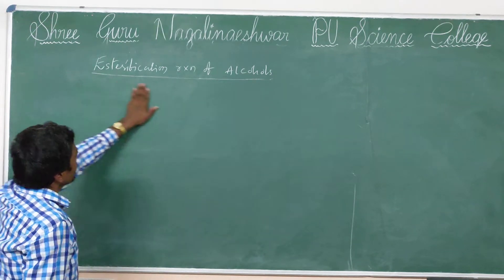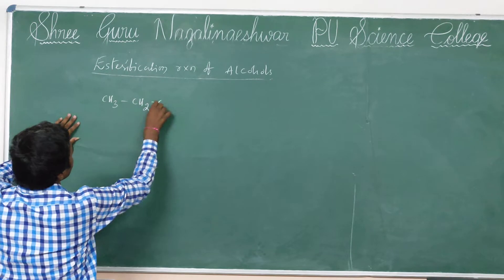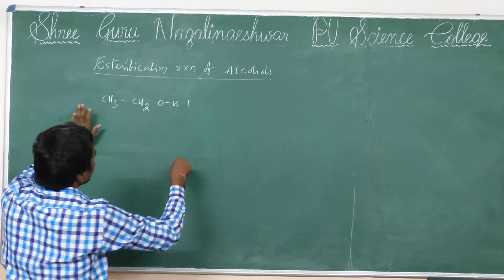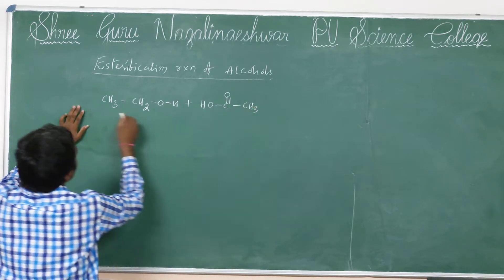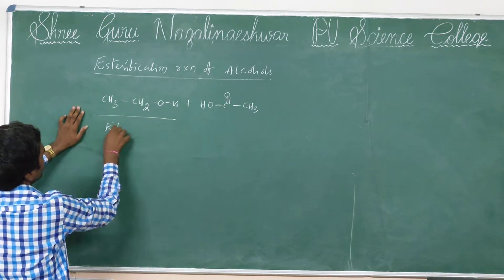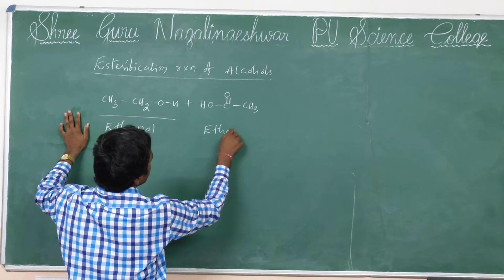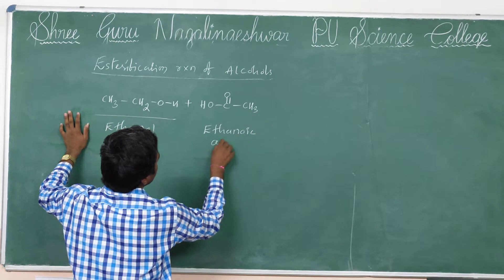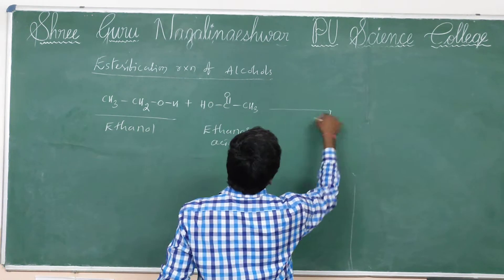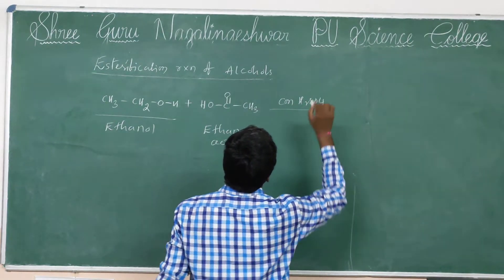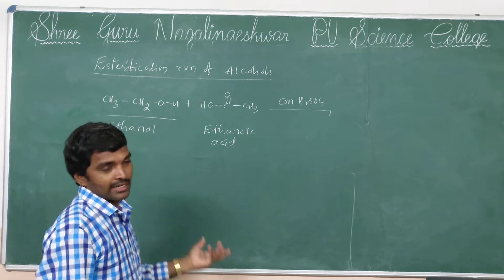So here, ethyl alcohol CH3CH2OH reacts with carboxylic acid — ethanol reacts with acetic acid, otherwise ethanolic acid. This reaction takes place in the presence of a catalyst. This is the best example of a dehydration reaction.